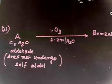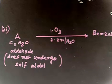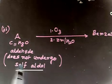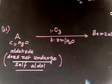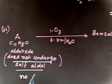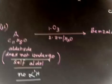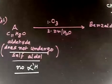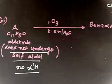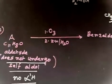Now let us discuss the next road map problem. You have an aldehyde whose molecular formula is C11H8O. This aldehyde does not undergo self-aldol condensation, which means it does not have any alpha hydrogen — there is no alpha hydrogen in this aldehyde.